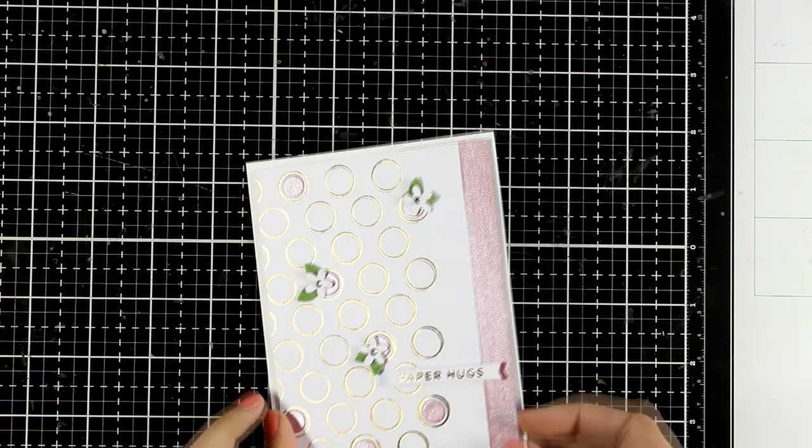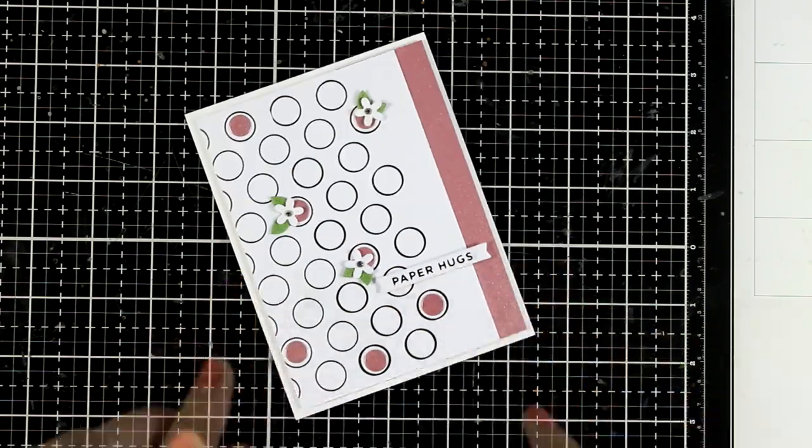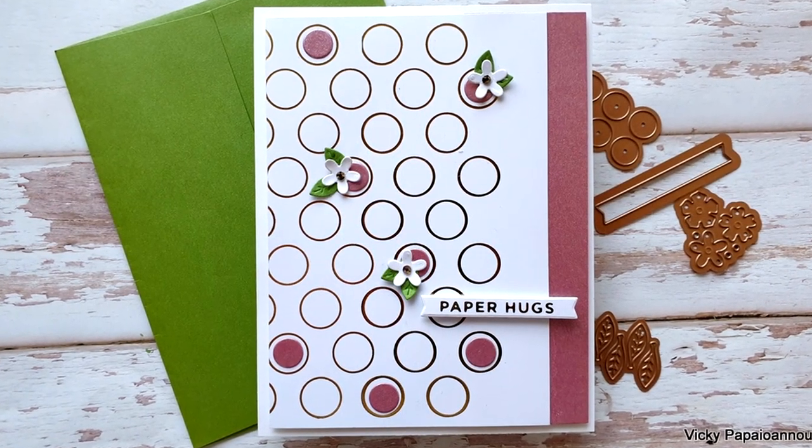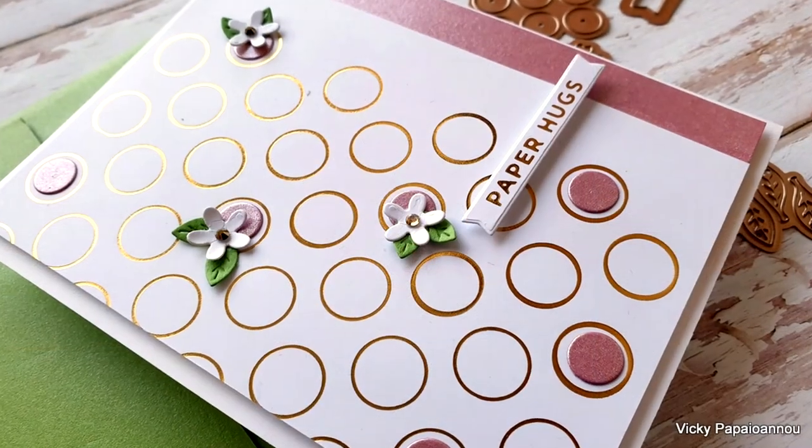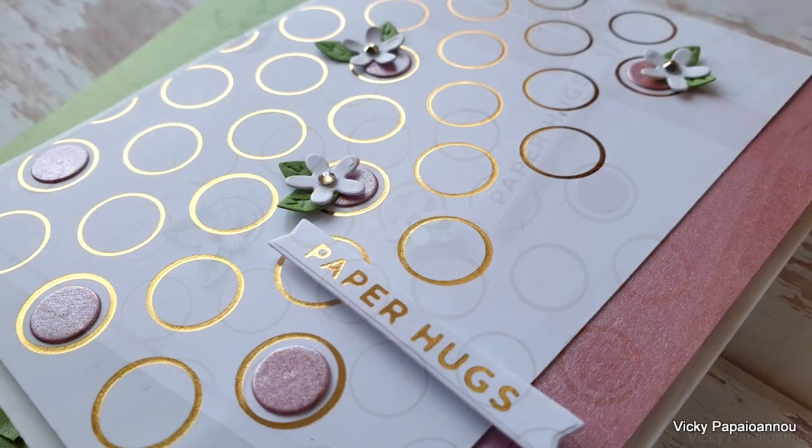And here is my finished card using the Glimmer Kit of the Month by Spellbinders. Just like always, you will find the link of all the supplies that I used down below the description area. Thank you all so much for joining me today. Don't forget to leave me a comment and to like the video. And I'll see you all next time.